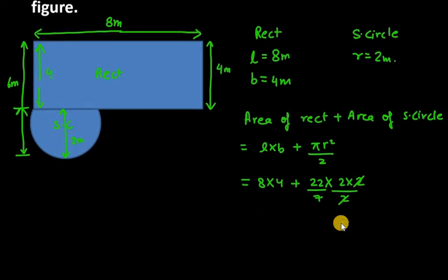So 8 into 4 is 32 and you get 22 over 2, 22 into 2, sorry this is 44, 44 over 7. Now you can reduce 44 over 7, this is 6.28, so you have 32 plus 6.28.